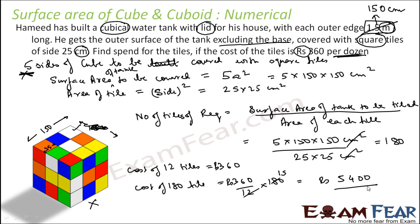Putting in the values: 360 ÷ 12 = 30, so 30 × 180 gives 5400 rupees as the total cost for tiling this cubical water tank on five sides. Please pay attention — there are many concepts here: different units, identifying five sides of the tank, covering with square tiles, finding the number of tiles, and then computing cost from a per-dozen price.